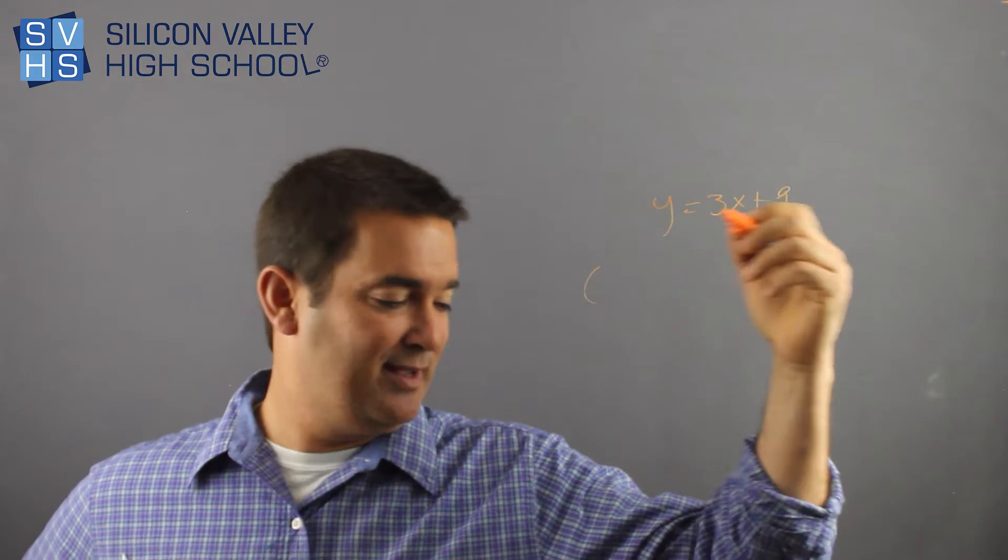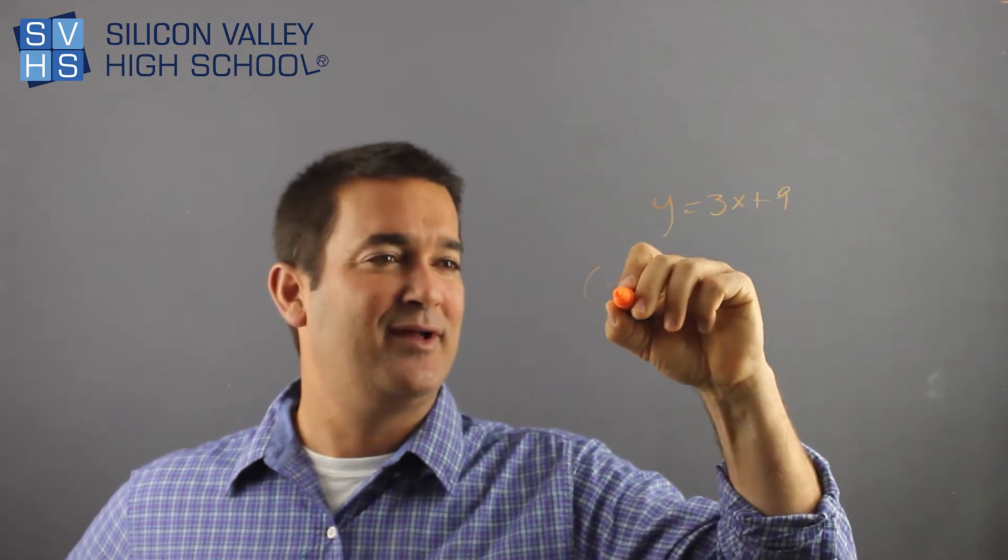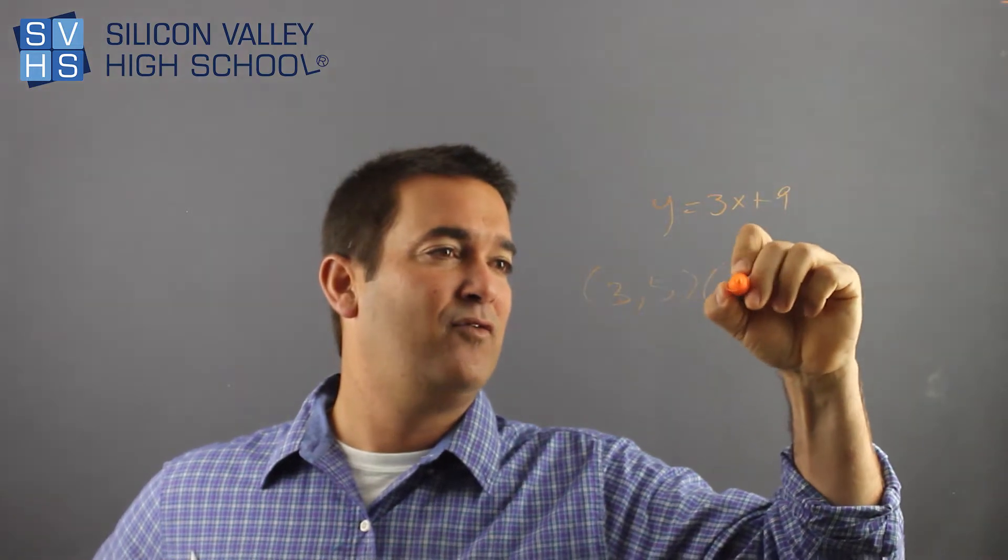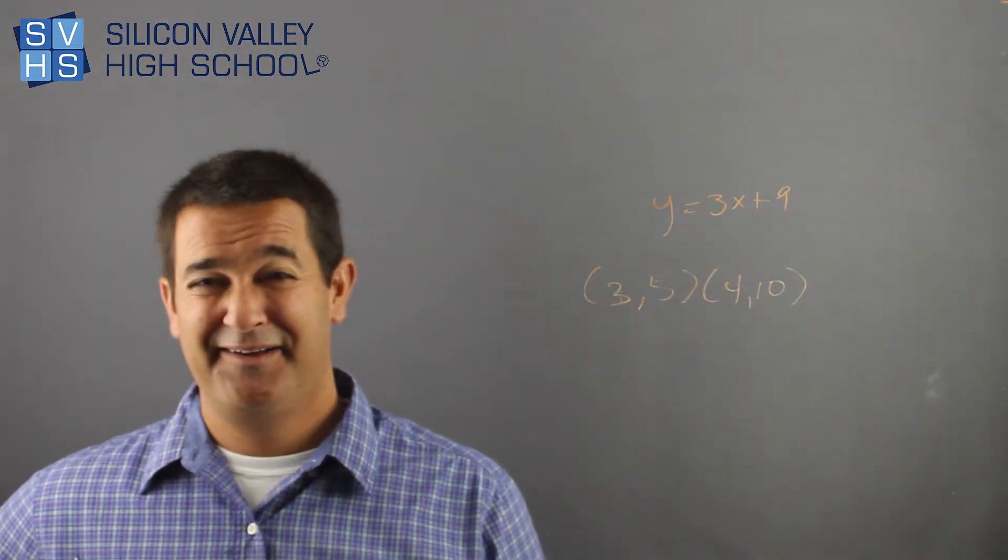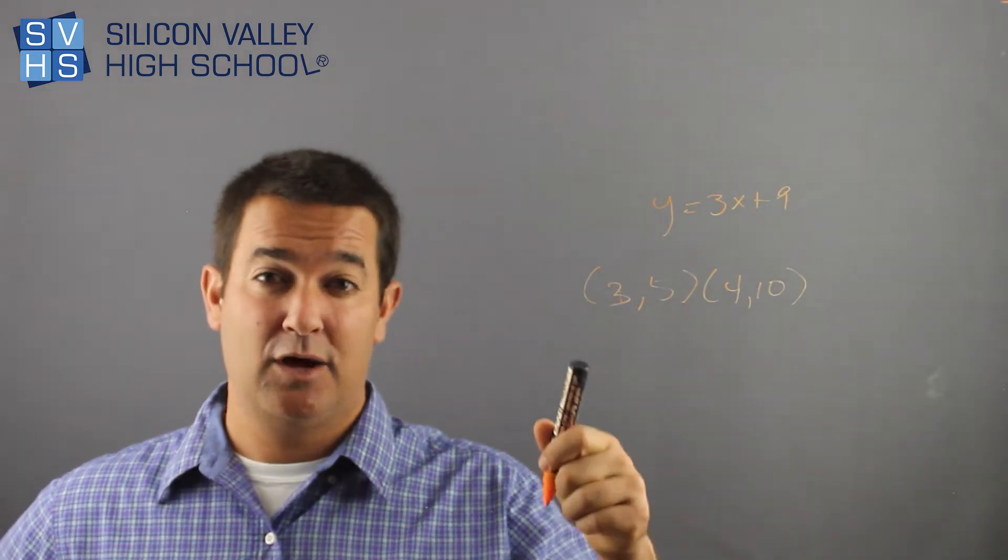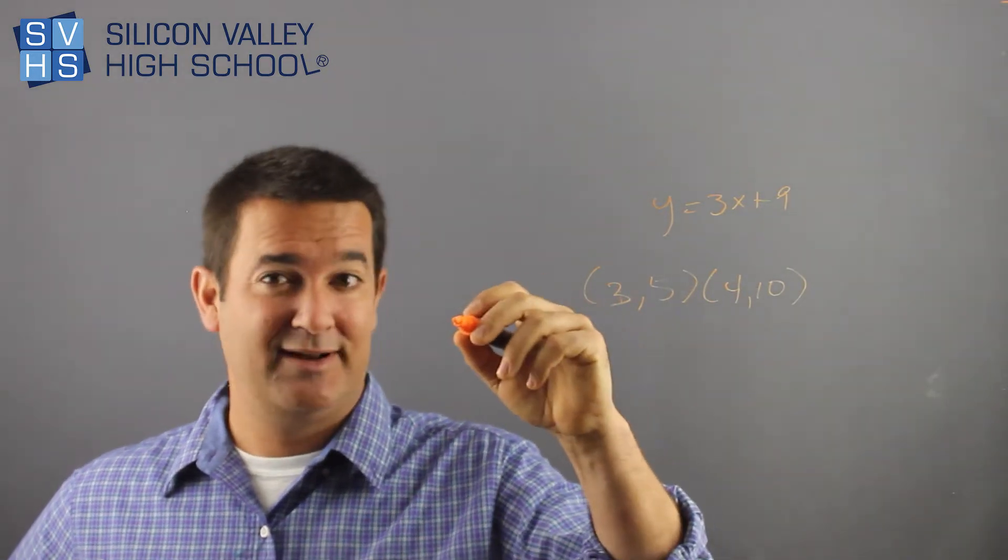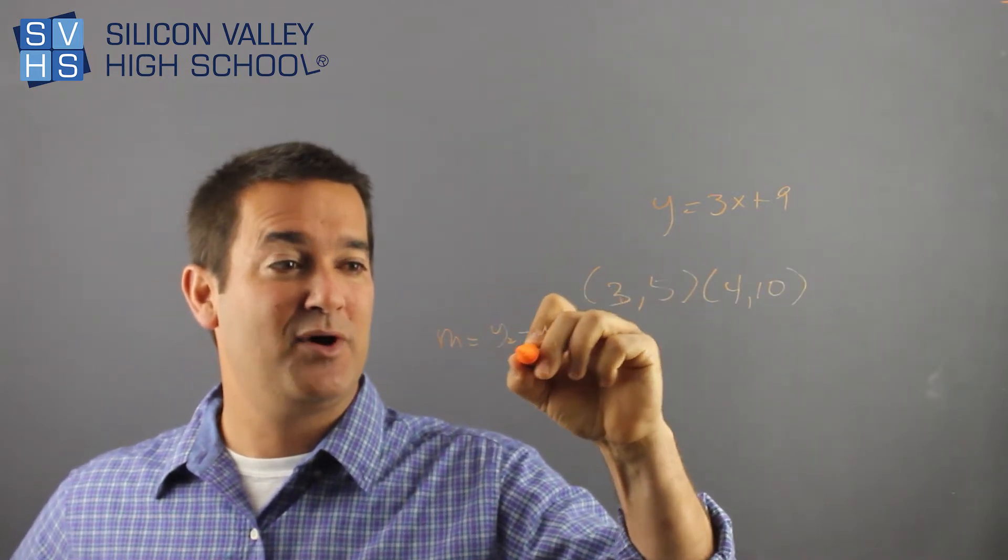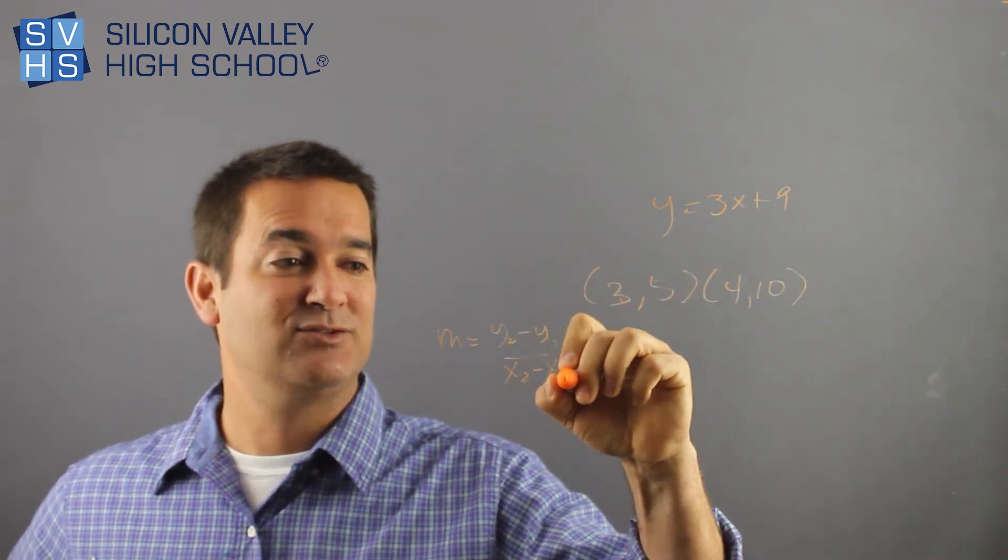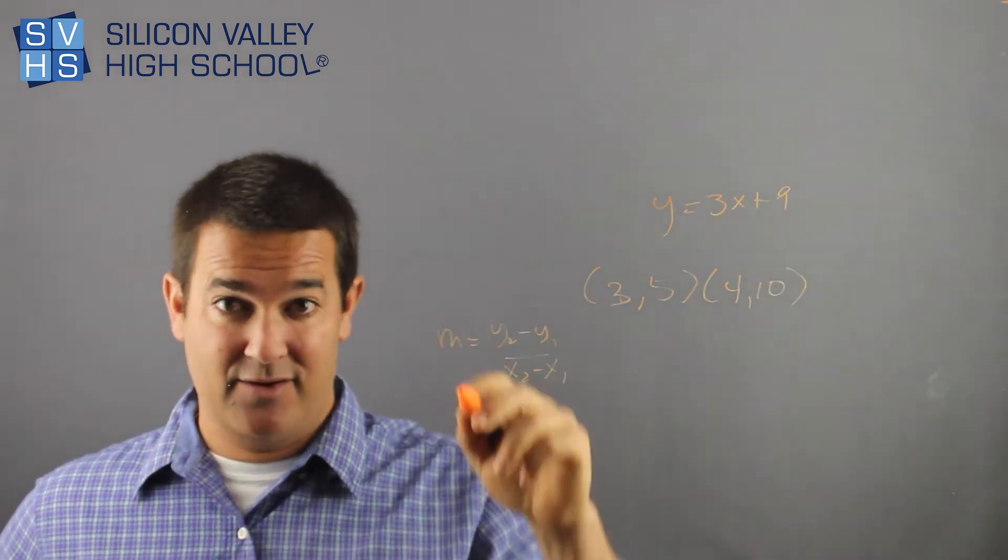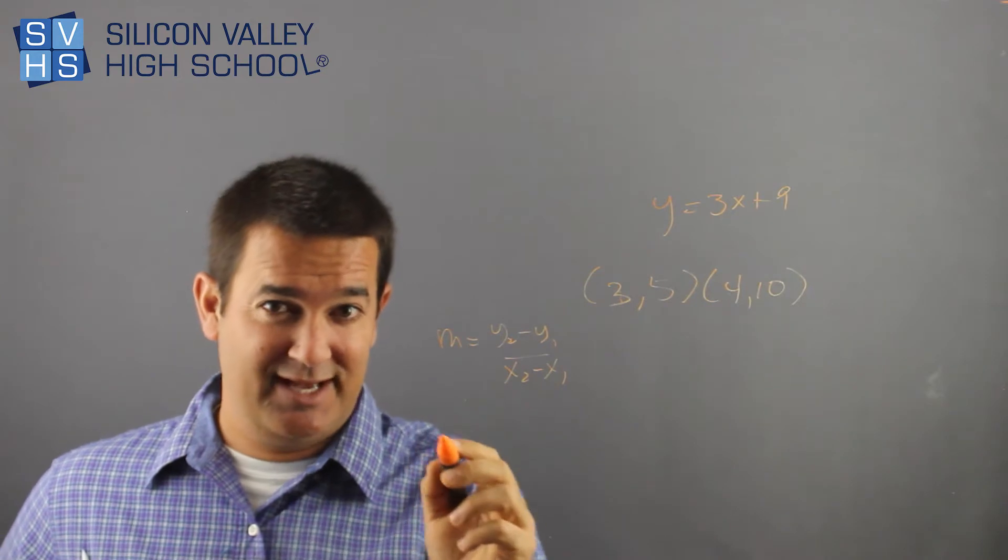What if they give you two points, right? This is kind of annoying. And they're like 3, 5, and like 4, 10. What's the slope? Oh, man. Ryan didn't like explain this very well. Well, here's how you find the slope with two points. Ready for this? m = (y₂ - y₁)/(x₂ - x₁). Really, all that means is change in y, which is up and down, over change in x, which is side to side.